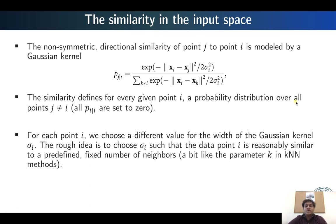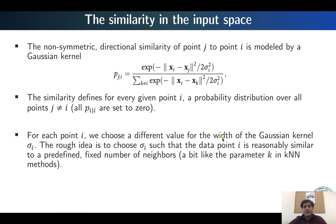How do we choose the kernel width? For each point, the width of the kernel is parameterized as sigma_I, varying from one point to another. The rough idea is to choose this kernel width such that the data point is reasonably similar to a predefined fixed number of neighbors — somewhat like the parameter k in k-nearest neighbor methods. This is where in the next slide the perplexity parameter will be used for defining the value of sigma_I.